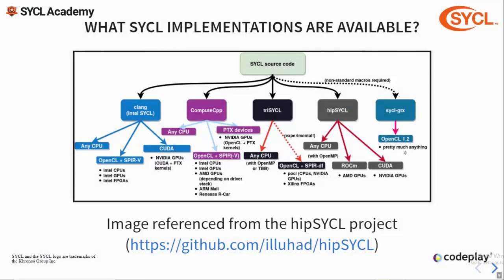So what implementations are there and which one is best for you? Firstly, there's DPC++, which is an open source implementation led by Intel as part of the OneAPI solution and is intended to be merged upstream to Clang and LLVM. DPC++ supports OpenCL and now CUDA backends through its plugin API. Between these two backends, DPC++ supports Intel CPUs, GPUs and FPGAs as well as NVIDIA GPUs.